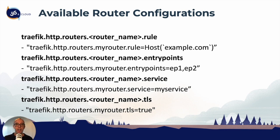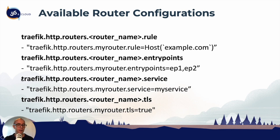There are approximately 10 router configurations available. The most important ones are: first, the router rule — assigning a rule such as host equals example.com. Next is the entry point — we can define exactly which entry points to assign to the router, for example entry point 1 or entry point 2. We can also tell traefik to connect to a specific service. This is done automatically by traefik, but sometimes you may have several services or want to connect the frontend to a different backend. By experience, I don't use this very often because traefik is usually smart enough, but in certain circumstances you may want to define the service explicitly.